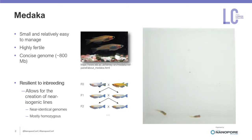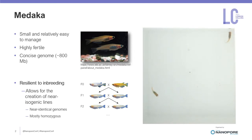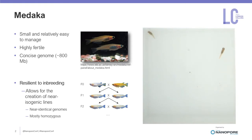The medaka is a small Japanese rice paddy fish which has a number of favourable traits in addition to a special one. The trait that, to our knowledge, is unique among vertebrates, is that medaka are resilient to inbreeding, which allows one to take a wild population and from it create a set of near isogenic inbred lines, where individuals within each line have near identical genomes to one another. This is extremely useful for exploring how genes interact with environment to create complex traits in natural populations.